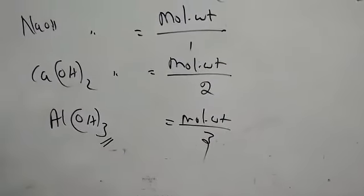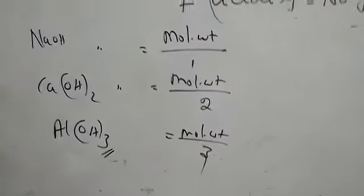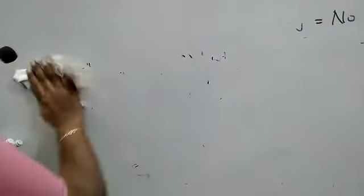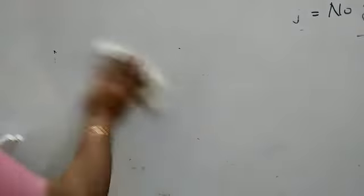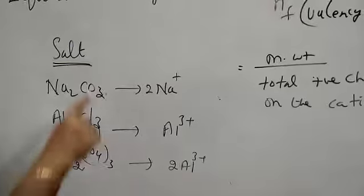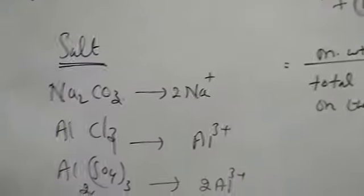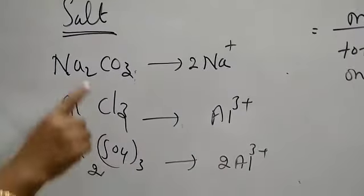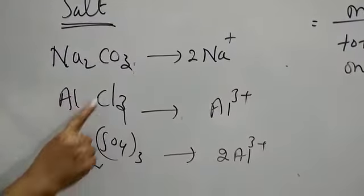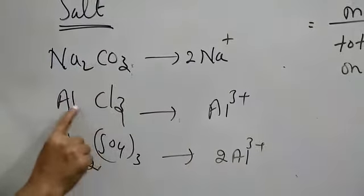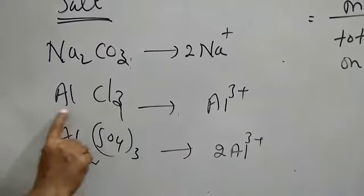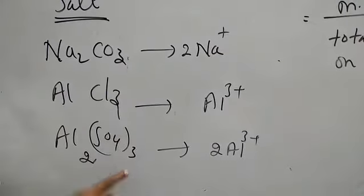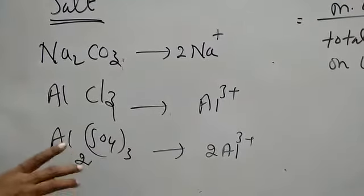Now we are moving to the third category: salt. Examples of salts: sodium carbonate — carbonate has valence 2, sodium has valence 1. Aluminium chloride — aluminium has valence 3, giving AlCl3. Aluminium sulfate — sulfate has valence 2, aluminium is 3.